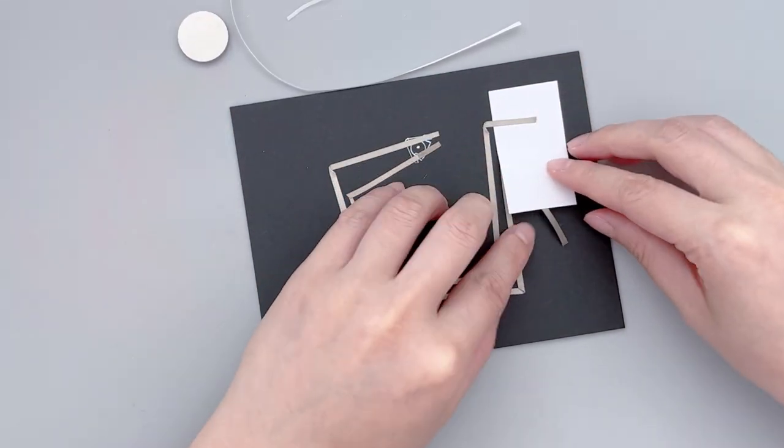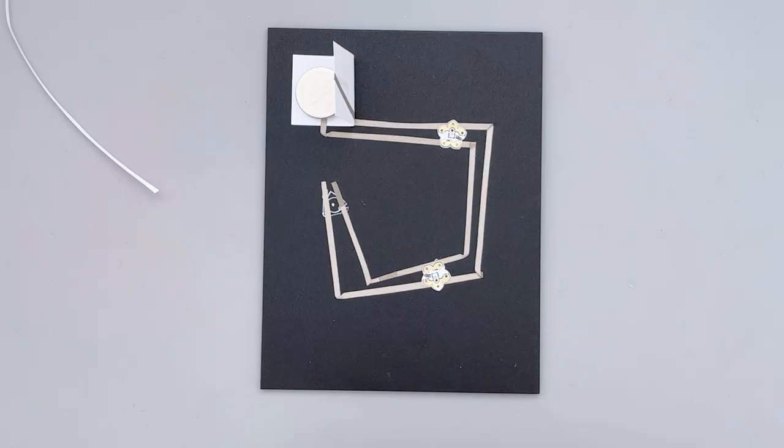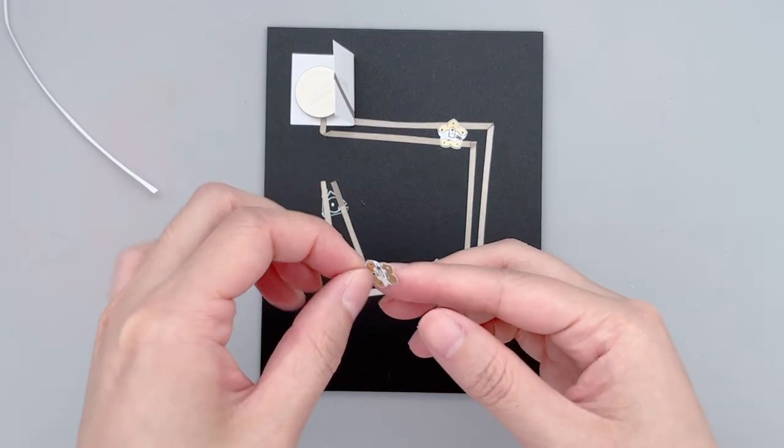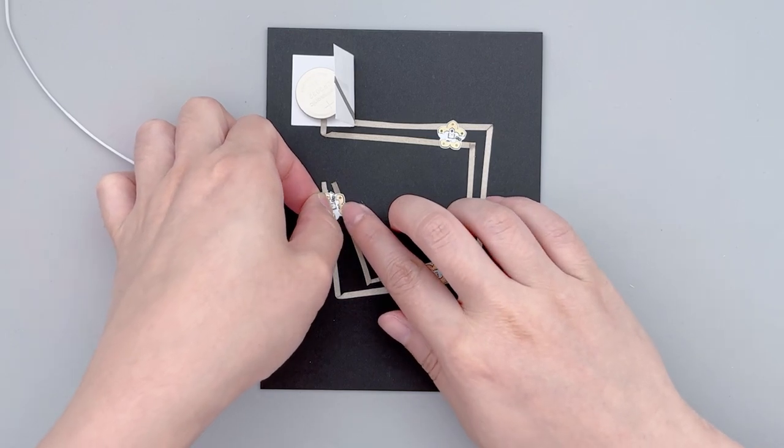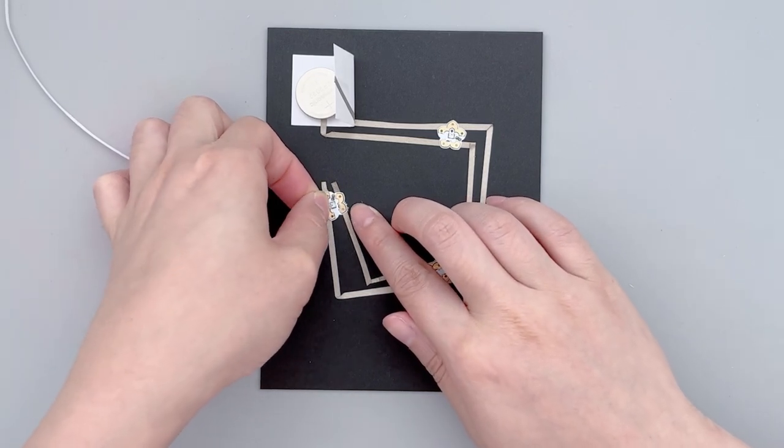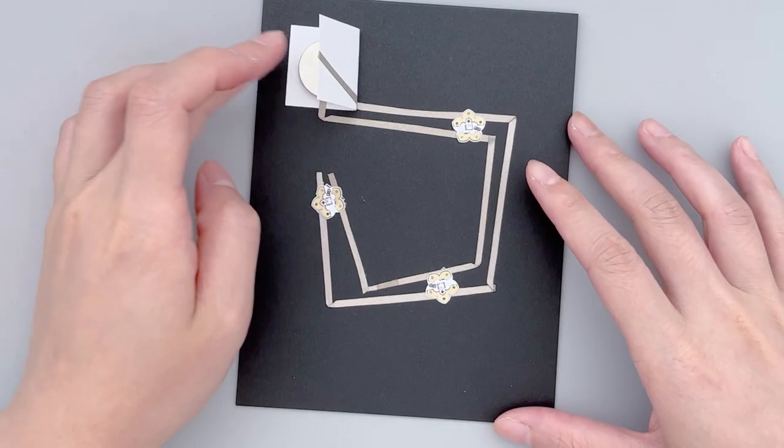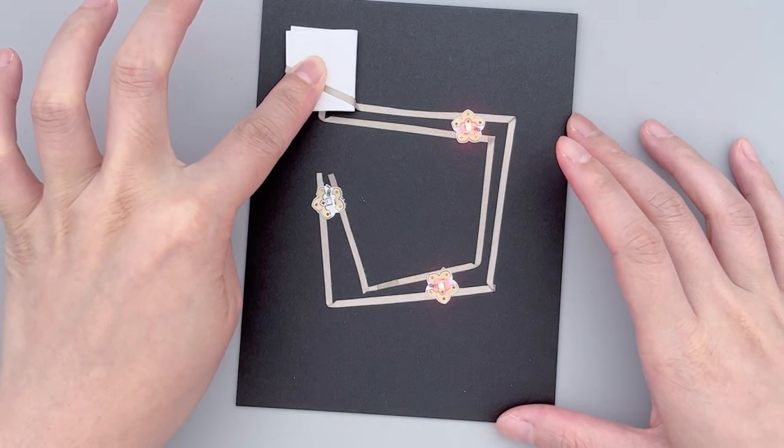For the final step, I stuck down the LED stickers based on the positions that we marked out earlier. These rainbow fade stickers are new to me and I thought the effects looked so cool. I was totally mesmerized by the animating rainbow lights.